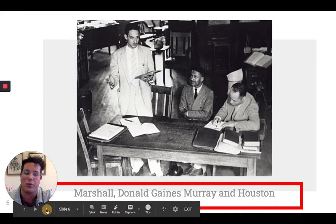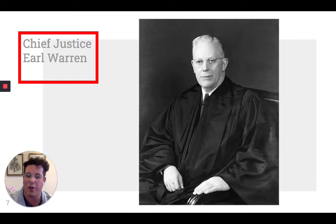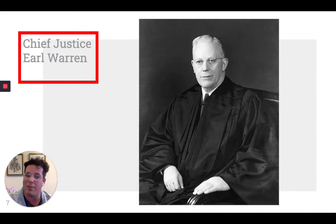Chief Justice Earl Warren was a key figure during this time as well. He became appointed by President Eisenhower over the summer of 1953. Historian Richard Kluger writes that Warren had favored a sweeping civil rights program beginning with a Fair Employment Practices Act. He insisted upon one law for all men. His arguments opened the deadlock in the Supreme Court, and in May 1954 it ruled unanimously that segregation by race in public schools was inherently unequal and that any language in Plessy versus Ferguson contrary to this finding is rejected.